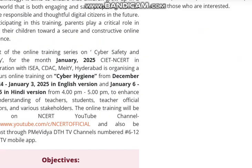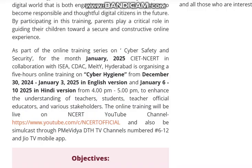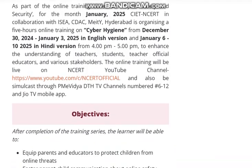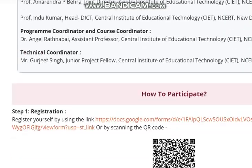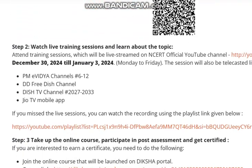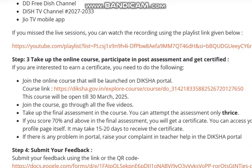The course has two parts: an English version from 3 January and a Hindi version from 6 January to 10 January. Here we can see the objectives. After registration, the second step is to take up the online course, participate in the post-assessment, and get a certificate. Click on this link to get started.